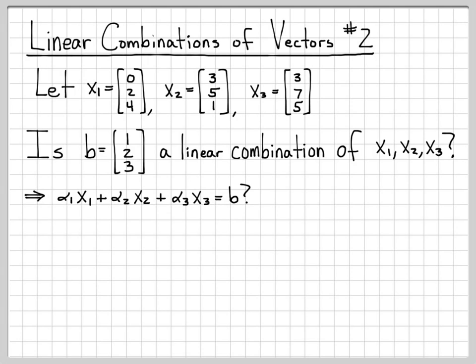Mathematically, what that means is, is it possible to write b as a linear combination of the vectors x1? So is it possible to find alpha 1, alpha 2, and alpha 3 to make this equation true? This is the vector form of the equation that we would like to solve, if possible, for alpha 1, alpha 2, and alpha 3.